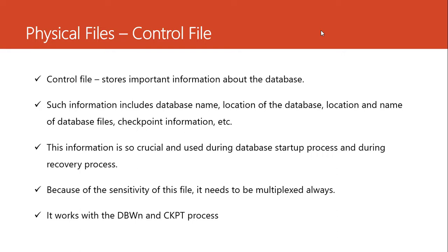That information is stored in the control file, and it is extremely important when we are recovering the database from any failure. We also look at the database name, where the database is stored, and what are the names and locations of different database files — like the data file, redo log file, the parameter files, etc. All this information is stored in the control file. Without a control file, we cannot start the database. This file is used whenever we are recovering from any loss or whenever we are starting up the database, so this file is extremely important and it should always be backed up.